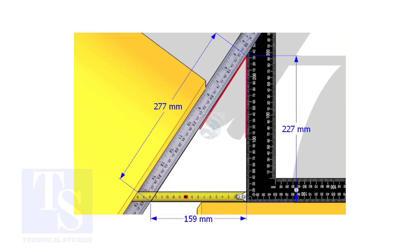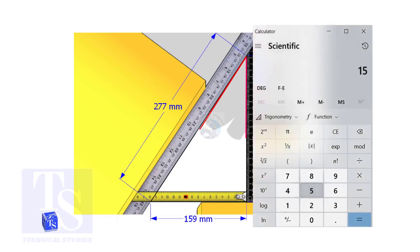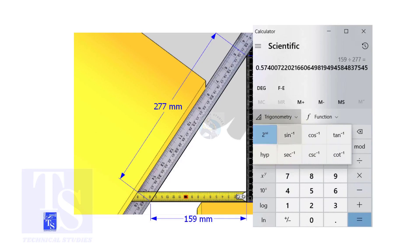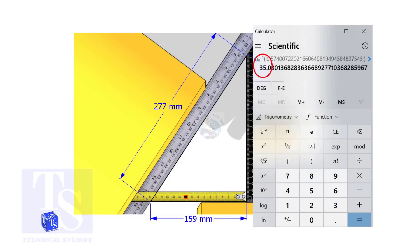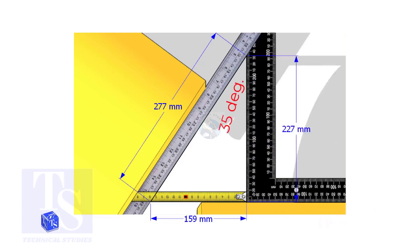If you apply the sine rule, the angle will be 159 divided by 277, shift sine. So the answer is 35 degrees.